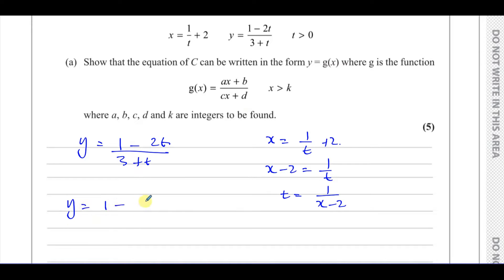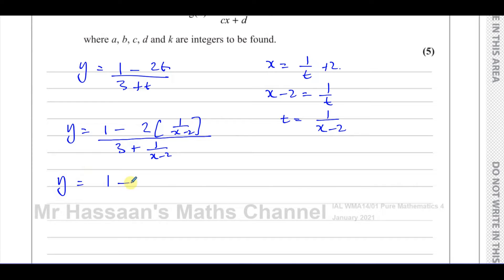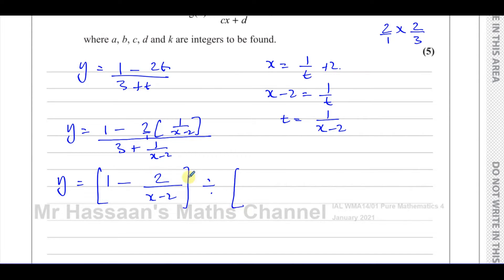So I write y equals 1 minus 2 times (1 over x minus 2), that's taking the place of t, over 3 plus 1 over x minus 2. It looks messy having a fraction over a fraction, so I rewrite this: the numerator becomes 1 minus 2 over x minus 2. Don't make the mistake of thinking the 2 multiplies both parts of the fraction — 2 times 1 over x minus 2 is 2 over x minus 2. The denominator is 3 plus 1 over x minus 2.